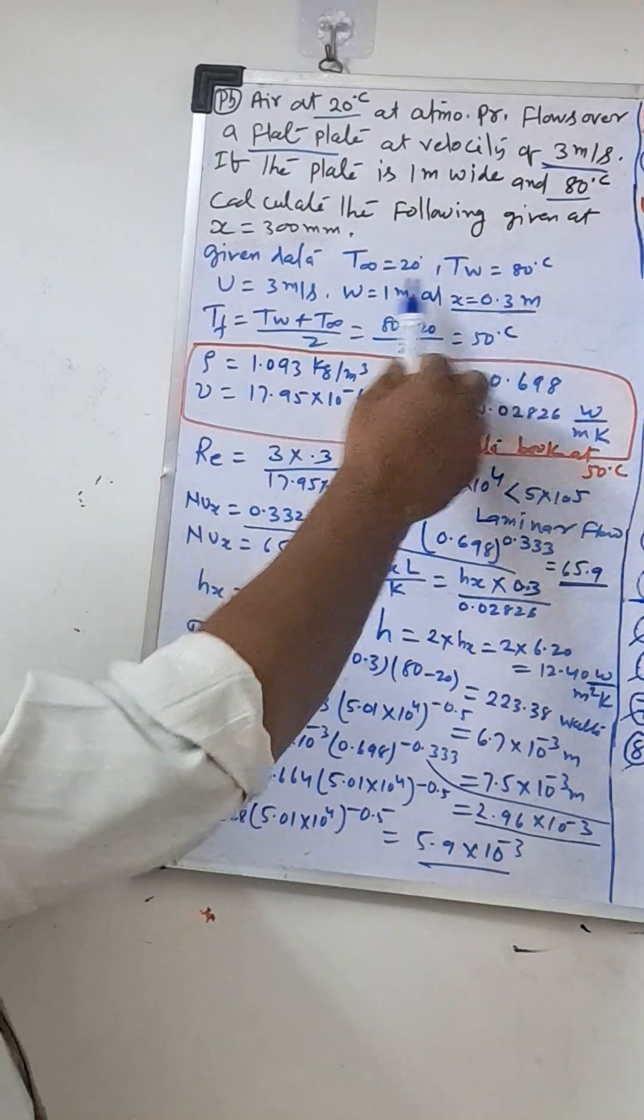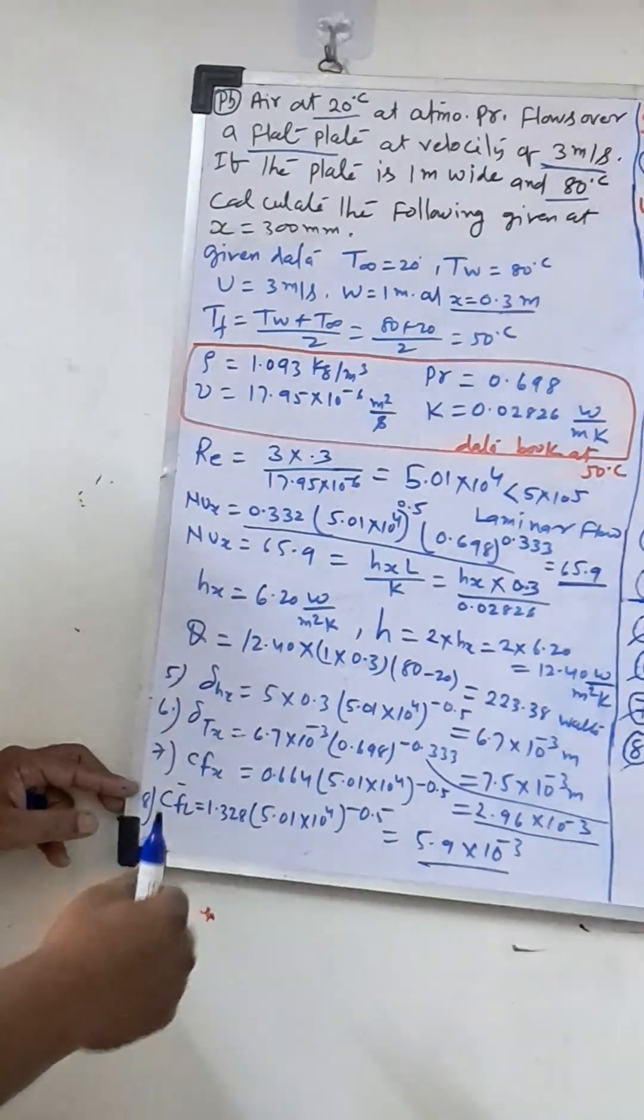So here the given surface temperature, film temperature with velocity and all. So what is the trick here?